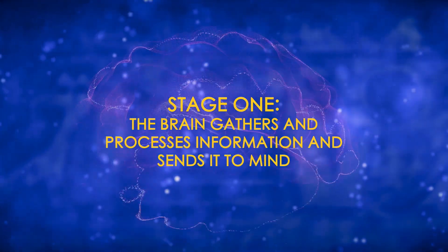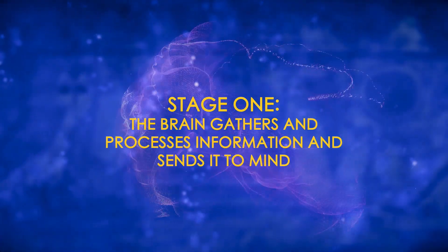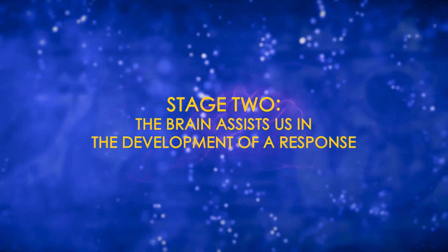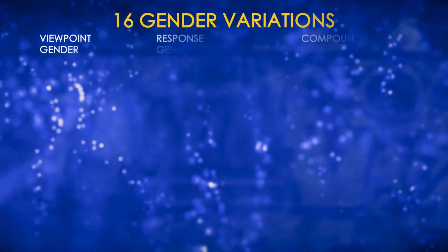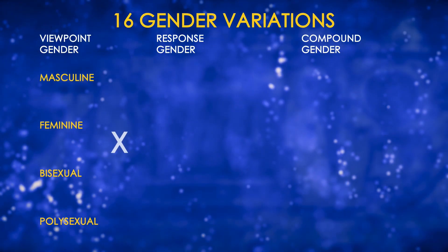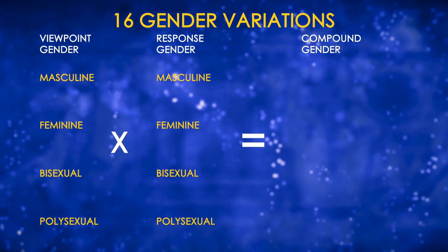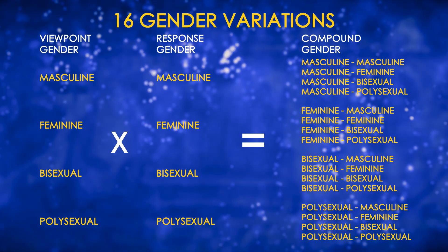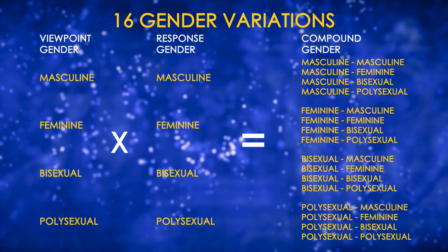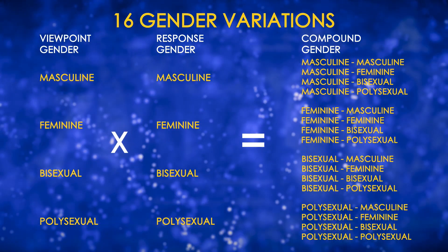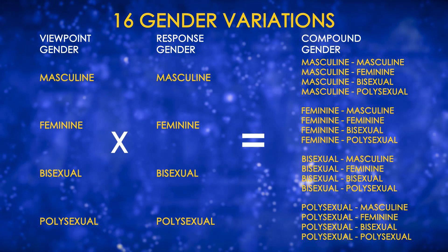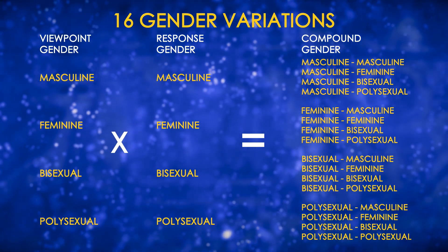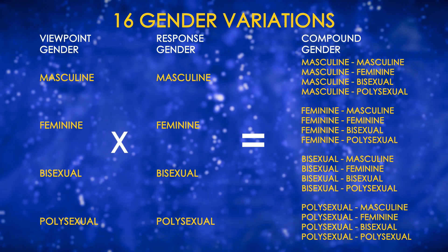In stage one, the brain gathers and processes information and sends it to the mind. In stage two, the brain assists us in the development of a response. Our sexual orientation is affected because the systems that process our information are gendered and we feel the effects of the behaviors they produce. Since one of four gendered systems will default to help us process information input, and one of four will default to help us process information output, gender can compound in 16 different ways.